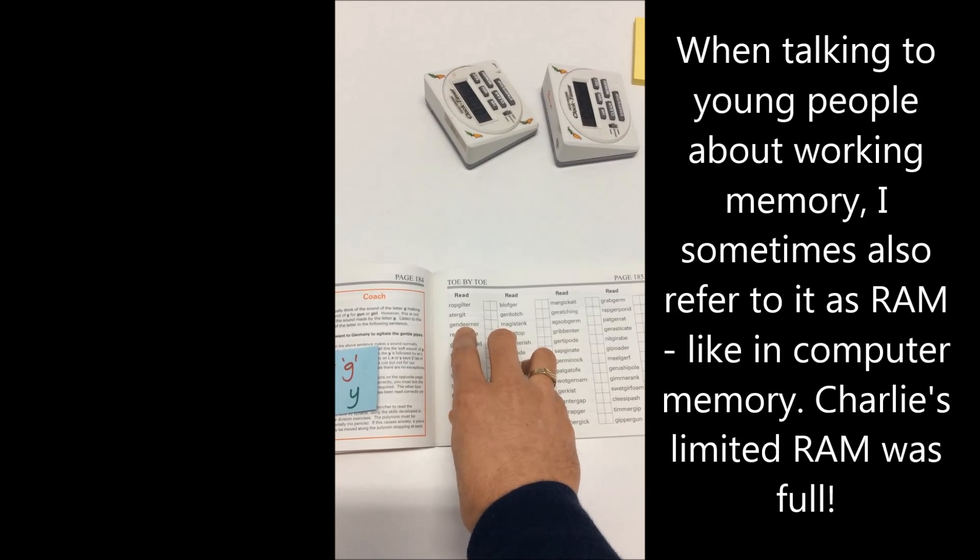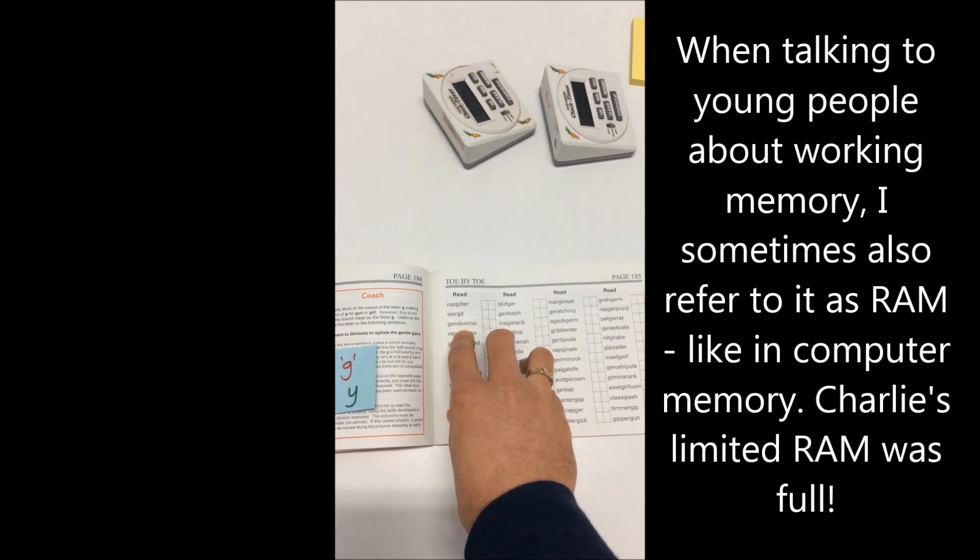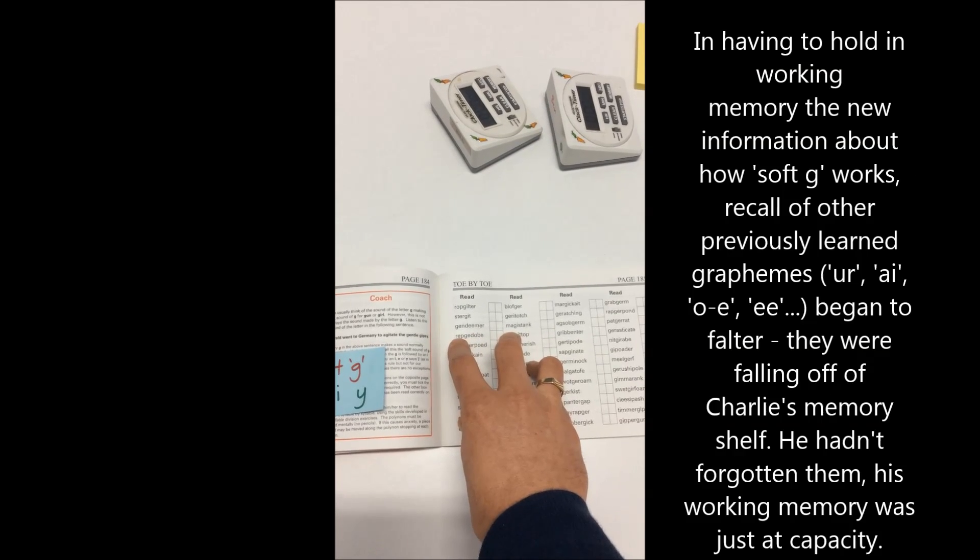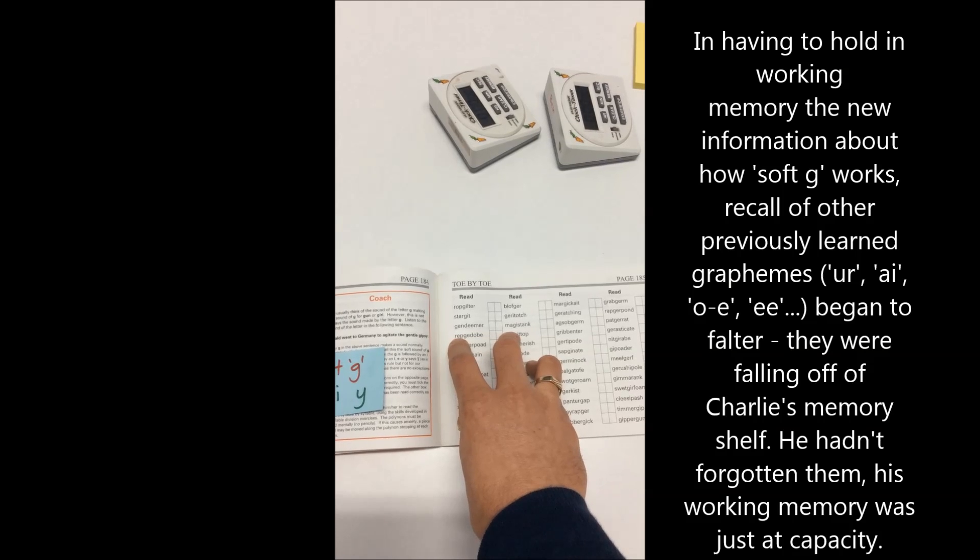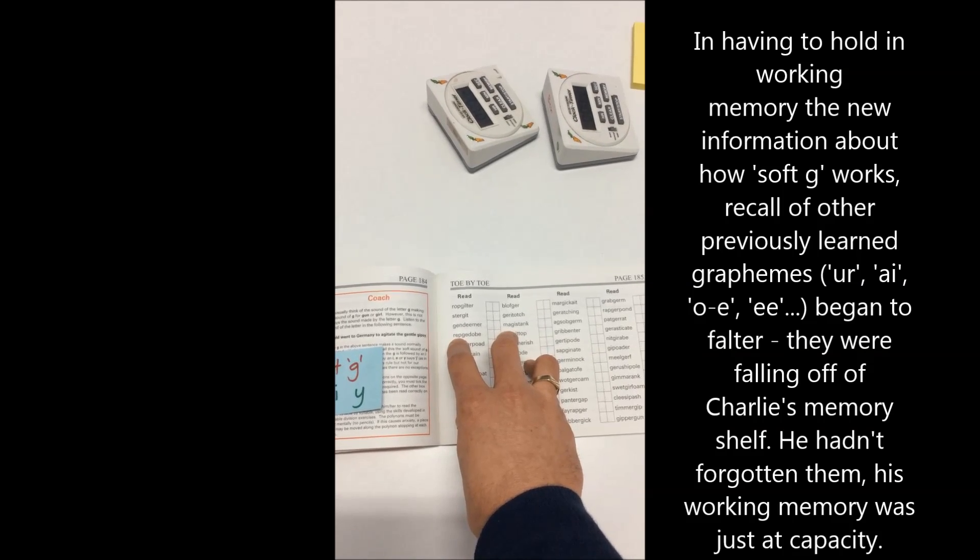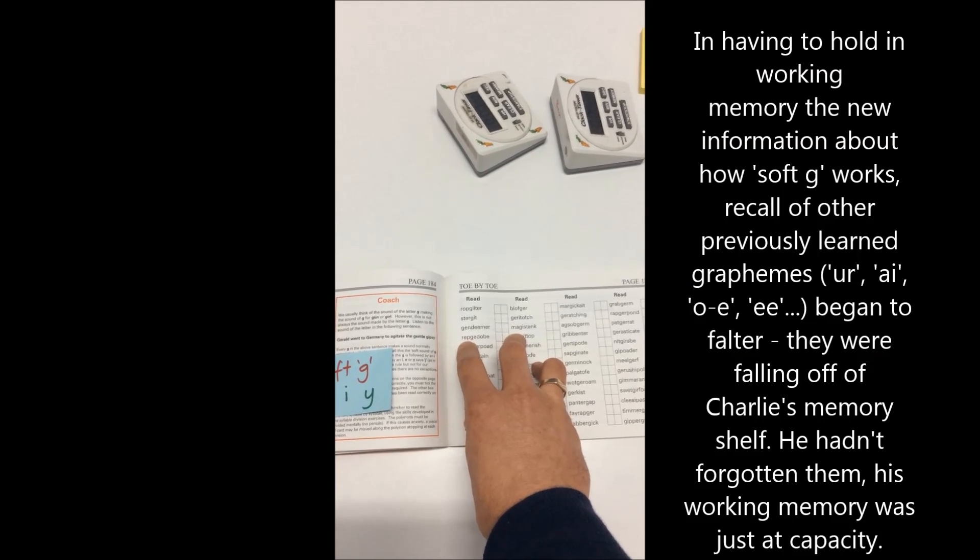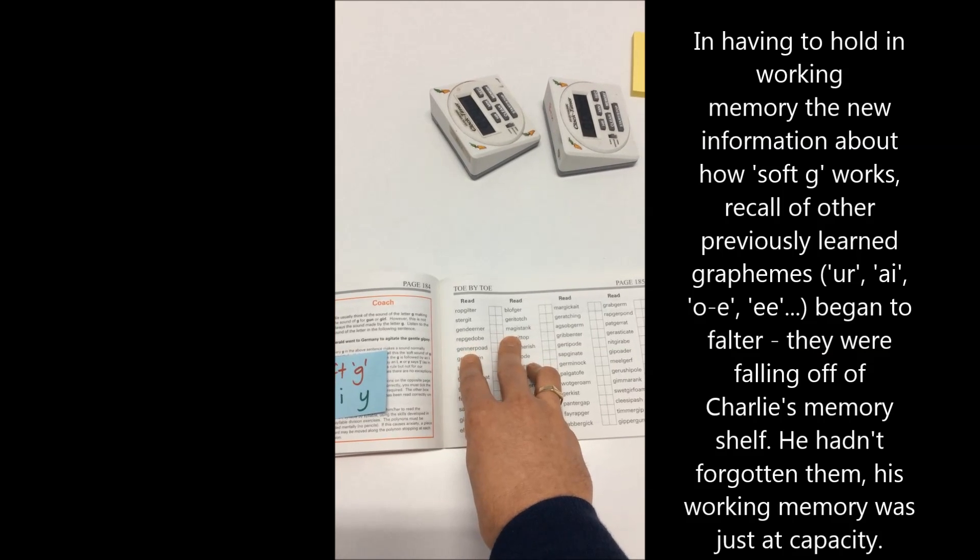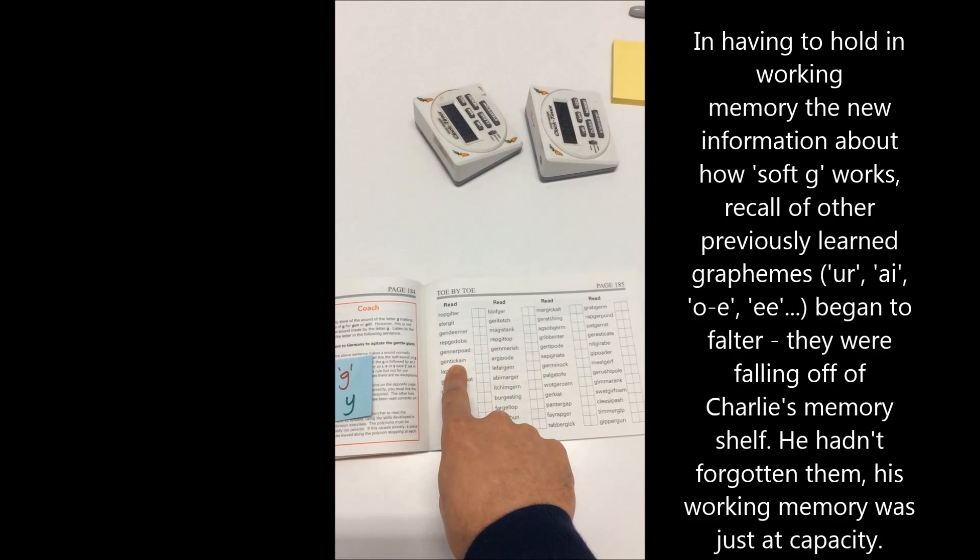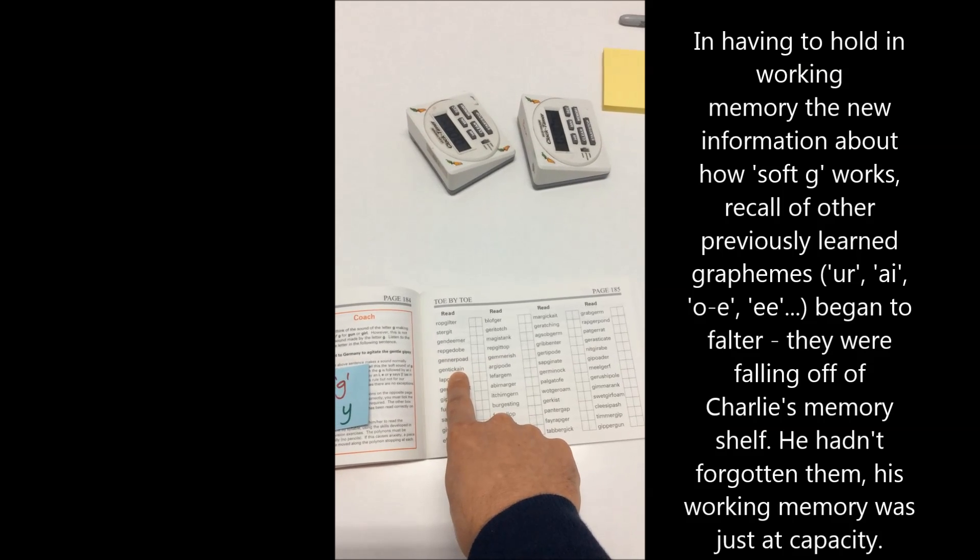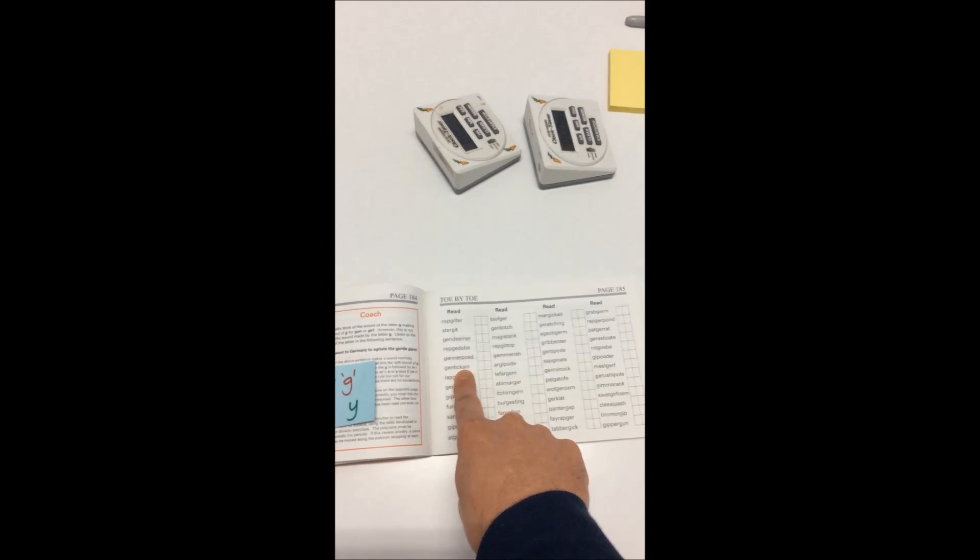In spending all his memory space on soft G and some other new things, he started to forget that things like the double E made E. He started to forget that in this one here, which is repgidob, he forgot that that second E makes an E sound, not an E sound. So the wheels started to fall off in his decoding of these words. You can see the AI there. He mistook that as the AT sound.